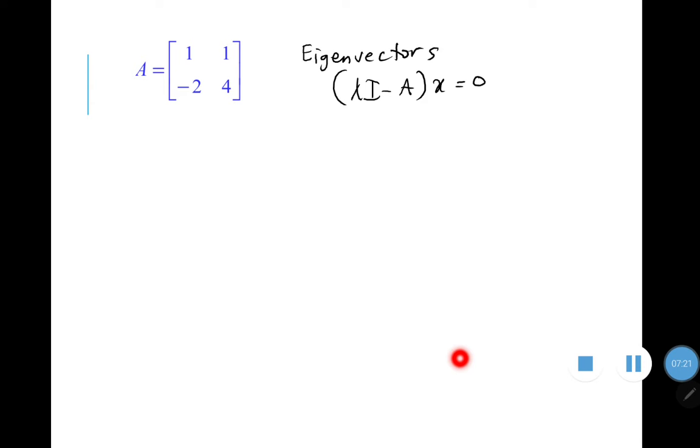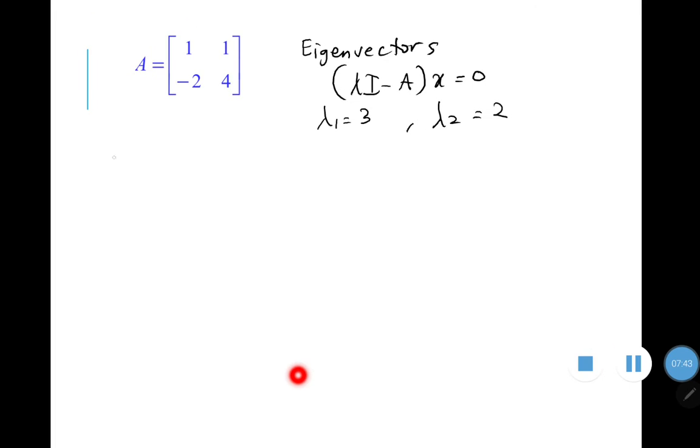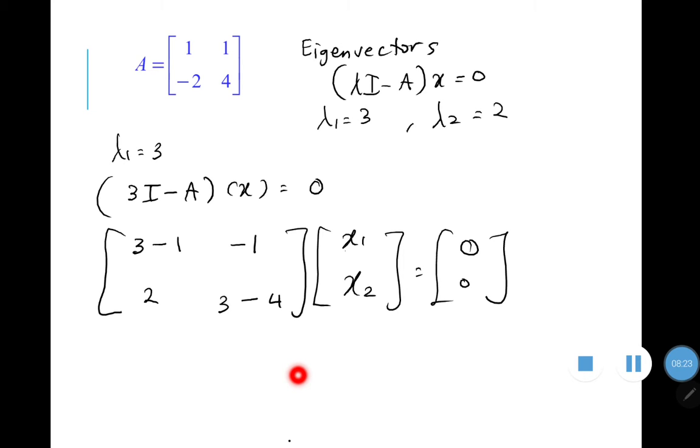So now we know the value of lambda is lambda one is three and lambda two is two right. So we're going to solve lambda one first. So lambda three i minus a times x equal to zero. And translate it into this matrix here. So three, three and then minus minus one minus one two minus four times x. So this one will be x1 and x2 equal to zero.